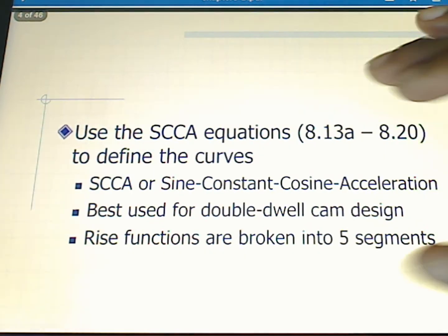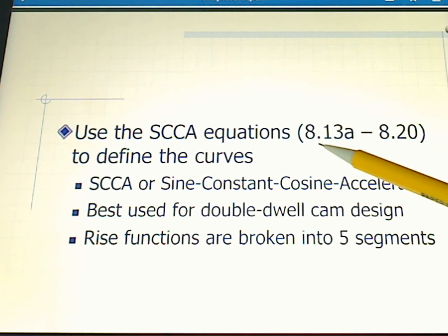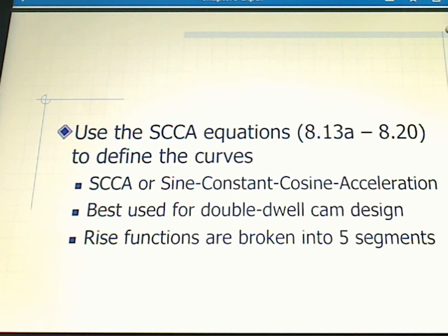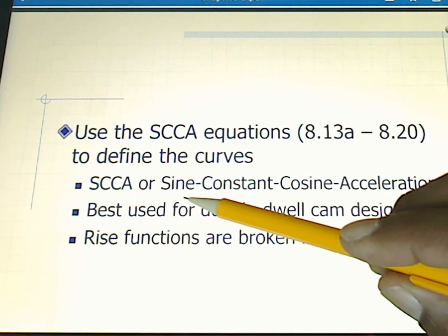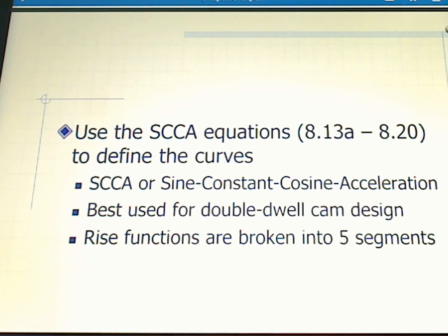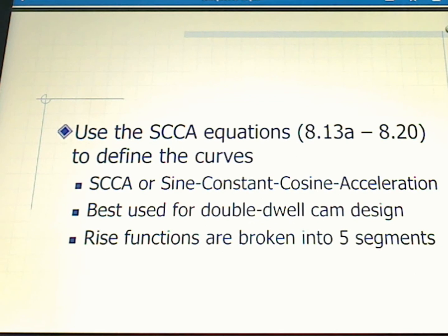For this design, we're going to use something called the SCCA equations. These are found in your textbook, equations 8.13a through 8.20. We're going to use these equations to define our curves, and our curves are for position, velocity, acceleration, and jerk. The SCCA stands for sine constant cosine acceleration. These particular equations are best used for double dwell cam design.